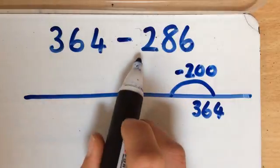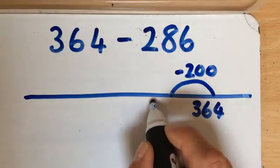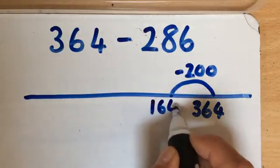So in this case I've decided to take away 200 because it should be quite straightforward to do that as a first step. So now I've got 164.